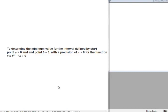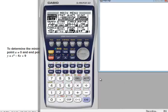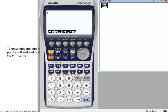I will press options, then F4 calculations, then F6, then F1 if I want the minimum value.